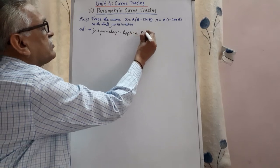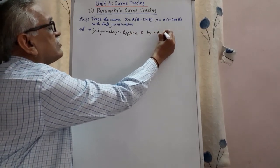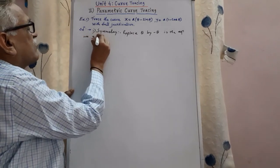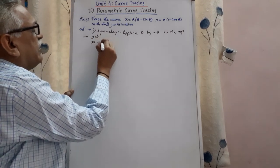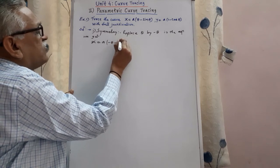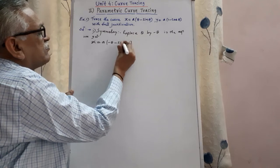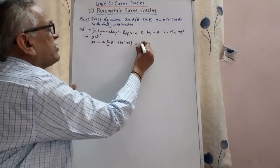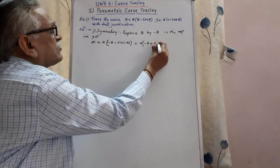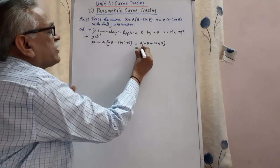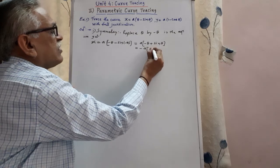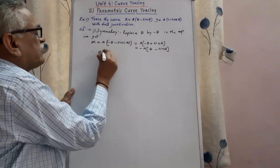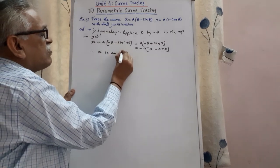Replacing theta by minus theta in the equation, we get that x equals a minus theta minus sine of minus theta, and that equals sine minus theta is minus sine theta. Therefore, it becomes a into minus theta plus sine theta. From this, we take minus common, we get theta minus sine theta. Therefore, same function but with negative sign, and therefore x is an odd function.